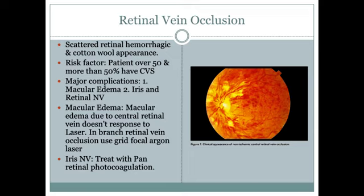Retinal vein occlusion is recognized by scattered retinal hemorrhage and cotton wool spots — yellow spots. Scattered retinal hemorrhage with cotton wool appearance indicates retinal vein occlusion. It is associated with cardiovascular symptoms — hypertension, prior heart attack. Patients are over 50 and more than 50% have CVS complications.